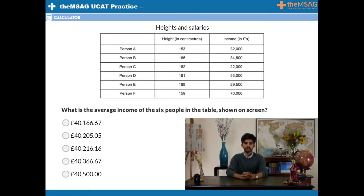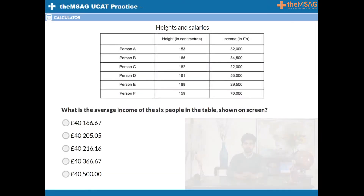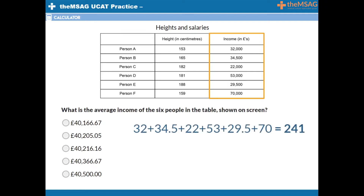What is the average income of the six people on the table shown on screen? Did you see how dropping zeros can save a huge amount of time and stress? To calculate the average income, we must first add up the figures in the income column. But adding 32,200 to 34,500, etc., would take forever. Rather than typing all 30 digits in that column, we can simply add 32, 34.5, 22, 53, 29.5 and 70 — that's only 14 digits to type, a massive time saving. Those six numbers add to 241.